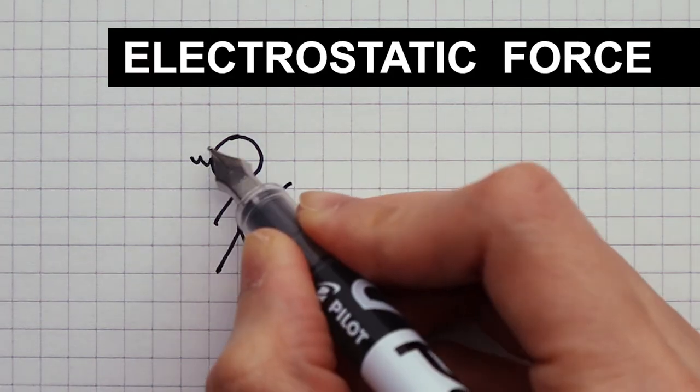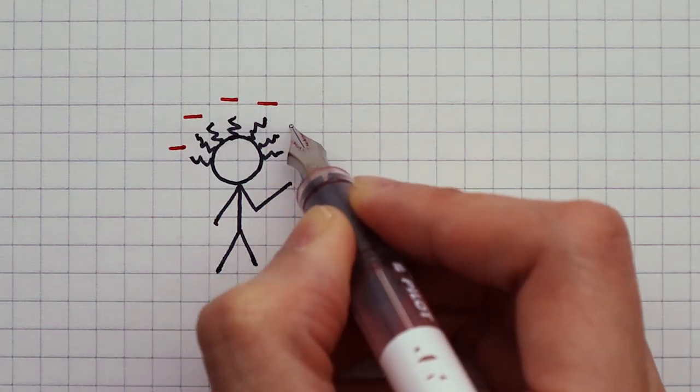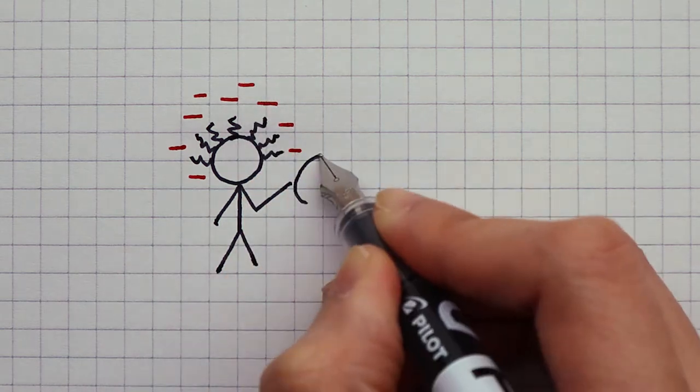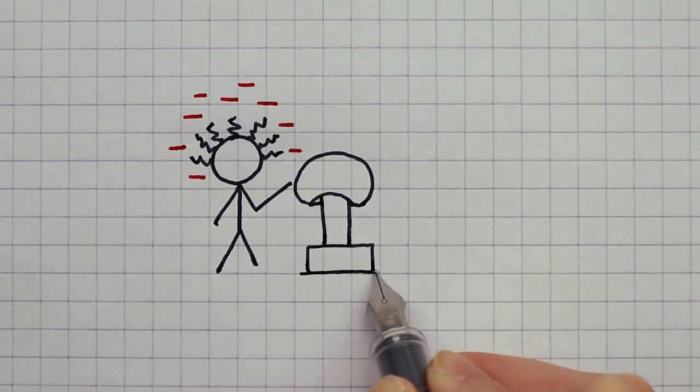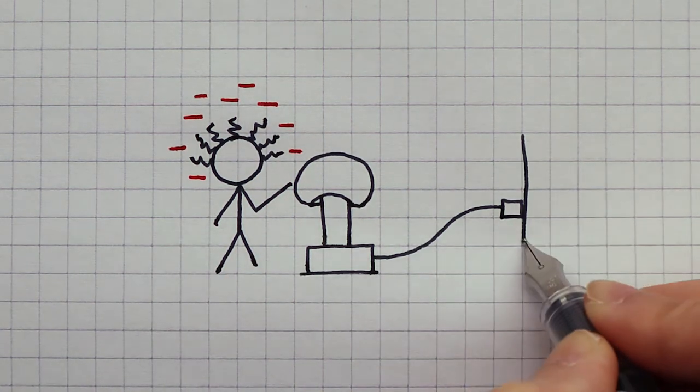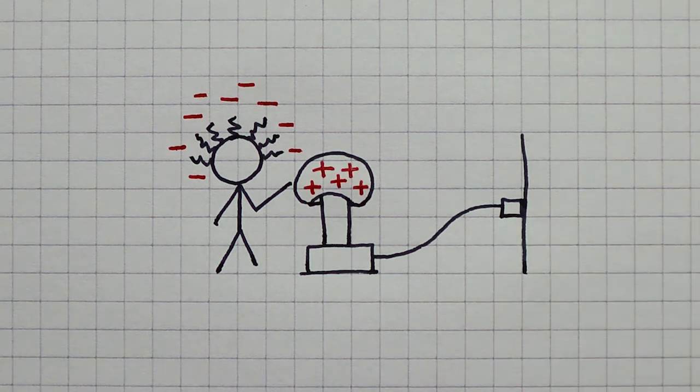When an object has more negative charge than positive charge, we say it is negatively charged. The same goes for a positively charged object. It has an excess of positive charge.